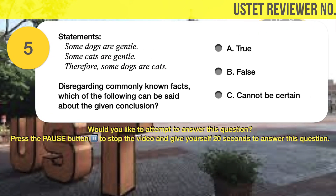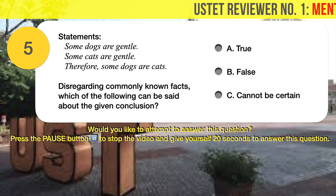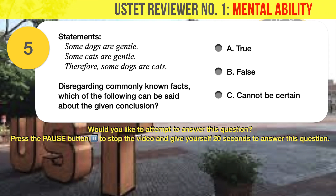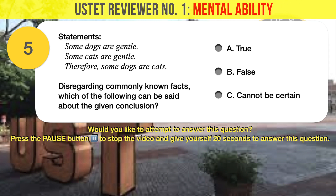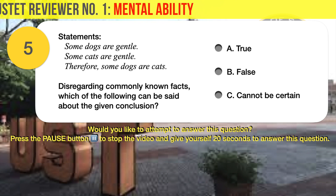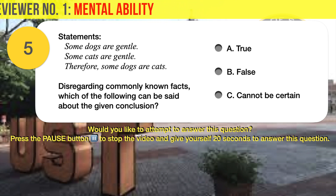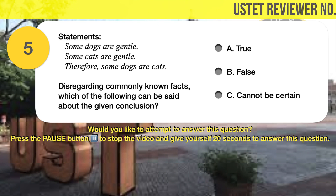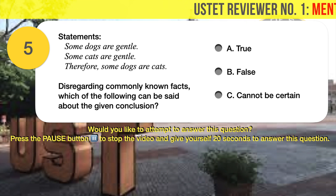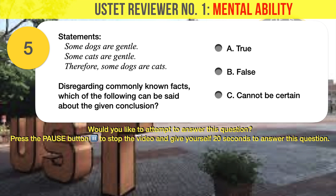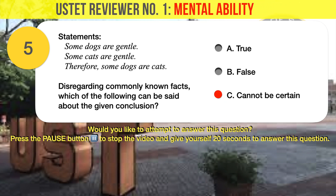Question number 5. Given the following statements: Statement 1 — some dogs are gentle. Statement 2 — some cats are gentle. Statement 3 — therefore, some dogs are cats. Disregarding commonly known facts, which of the following can be said about the given conclusion? A. True, B. False, C. Cannot be certain. The correct answer is C, cannot be certain.